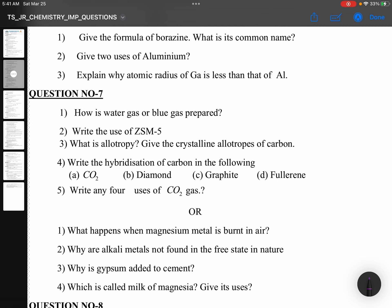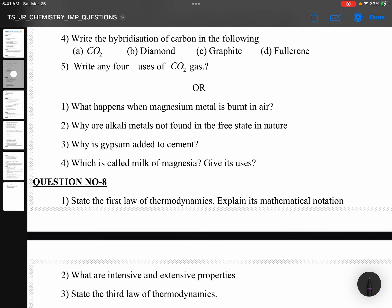Question number 7: How is water gas or blue gas prepared? So, hydrogen. Write the use of ZSM5. Okay now, alcohol to petrol. What is allotropy? Write the crystalline allotropes of carbon. Write the hybridization of carbon in the following: CO2 is SP, diamond SP3, graphite SP2, fullerenes SP2. Write any four uses of CO2 gases.